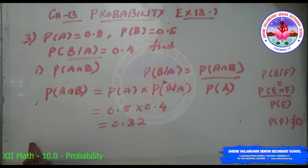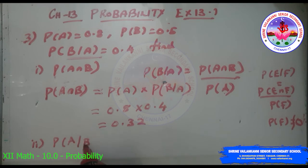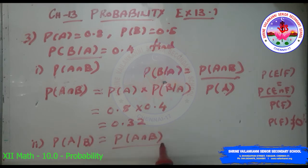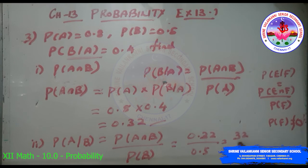Second subdivision: find P(A|B). P(A|B) = P(A∩B)/P(B) = 0.32/0.5 = 32/50 = 16/25.